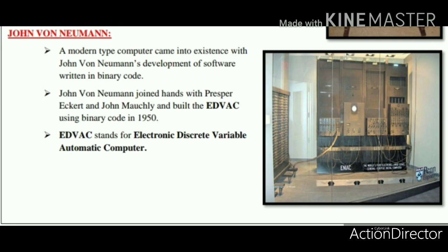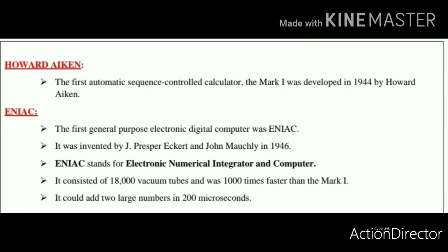Soon after this, John von Neumann developed software based on binary code. He joined hands with Presper Eckert and John Mauchly and developed the EDVAC machine in the year 1950, based on binary code. EDVAC stands for Electronic Discrete Variable Automatic Computer.